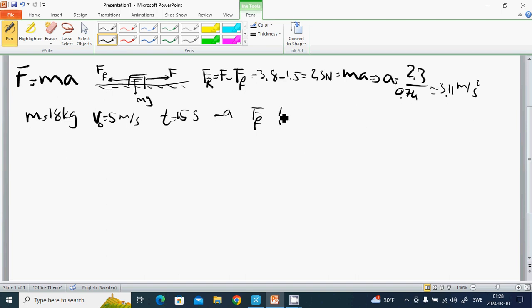And it is final and stays in 15 seconds. What is the retardation? And what is the friction force? What is mu? Then we know that a equals delta V delta T is minus 5 divided by 15, is minus 1 divided by 3.